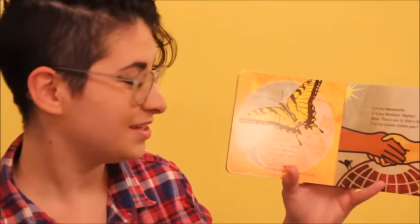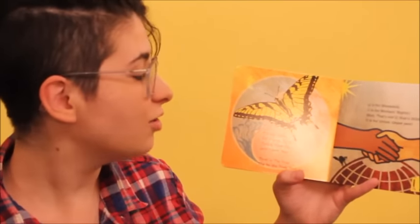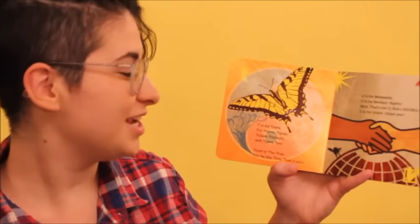T. T is for trans. For trains, tiaras, tulips, tractors and tigers too. Trust in the true. The he, she, they that is you.